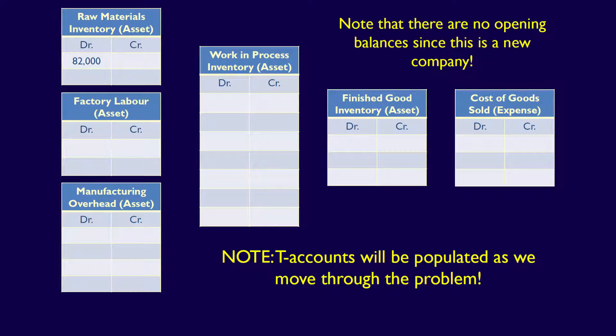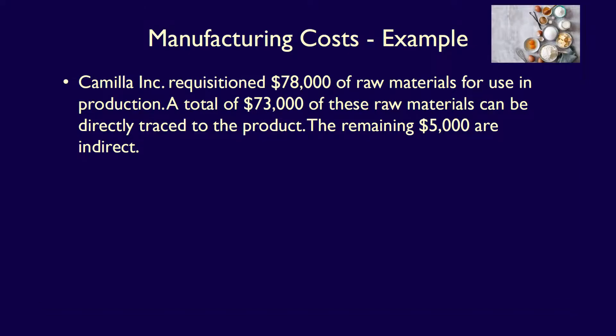We would record this by debiting raw materials inventory for $82,000 in the T-accounts, focusing only on accounts directly connected to manufacturing. Camilla Inc. then began manufacturing their custom cakes and requisitioned $78,000 of raw material. Of the $78,000 used in the production process, $5,000 is determined to be indirect and recorded as manufacturing overhead.